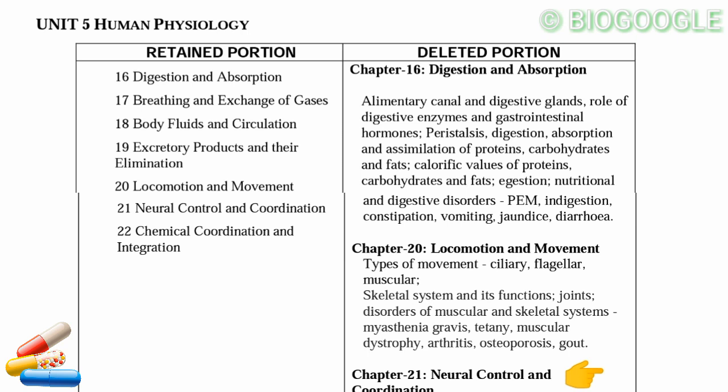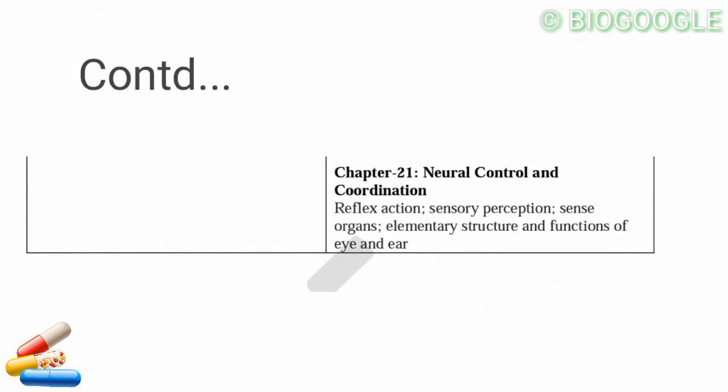Next: Locomotion and Movement — this chapter is deleted. Skeletal system, functions, joints and disorders — chapter deleted. Neural Control and Coordination — this chapter can also be deleted. Reflex action — deleted. Sensory perception, sense organs — deleted. Elementary structure and functions of eye and ear — deleted.